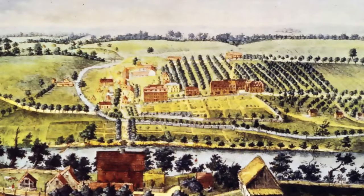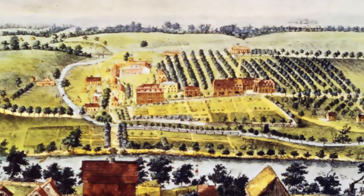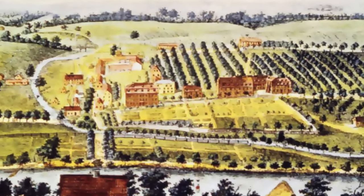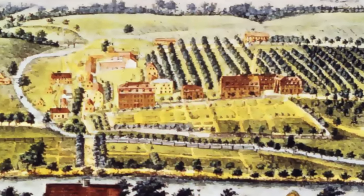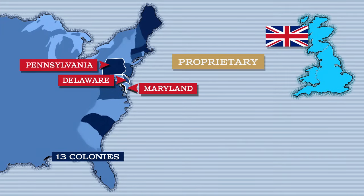Many royal colonies began as charter colonies, but had their charters taken over by the crown. Delaware, Maryland, and Pennsylvania were proprietary colonies.